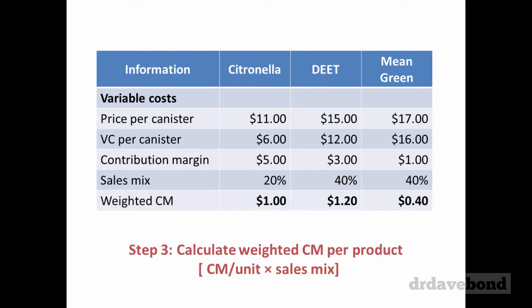We then calculate the weighted contribution margin per product. To get this, we take the contribution margin per unit for each product and multiply it by the sales mix for that product. For Citronella it's $5 times 20% giving you $1. For DEET it's $3 times 40% giving you $1.20. And for Mean Green it's $1 times 40% giving you $0.40.